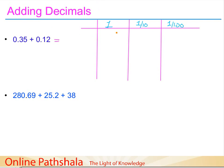For addition, we convert numbers into ones, tenths, hundredths, and so on. Let's take the first number 0.35: the ones column is 0, the tenths is 3, and the hundredths is 5. For 0.12: the ones is 0, the tenths is 1, and the hundredths is 2. If you have trouble converting, please see the previous videos in this series.